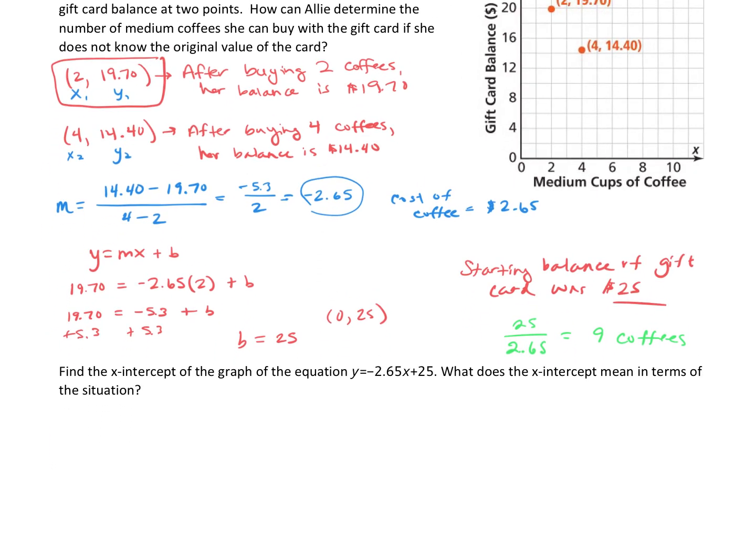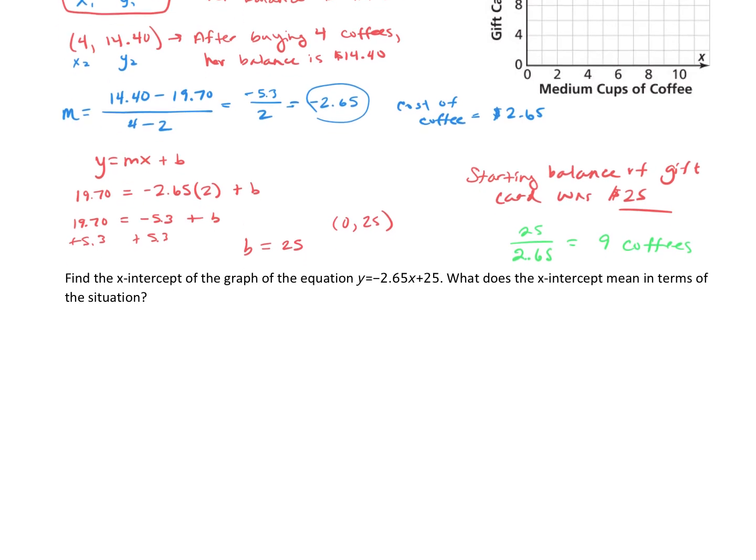All right, last question. Find the x-intercept of the graph of the equation y = -2.65x + 25. What does the x-intercept mean in terms of the situation? So we know the y-intercept. The y-intercept is given to us in slope-intercept form. If you need the x-intercept, what we do is we plug in a 0 for the y and solve for x.